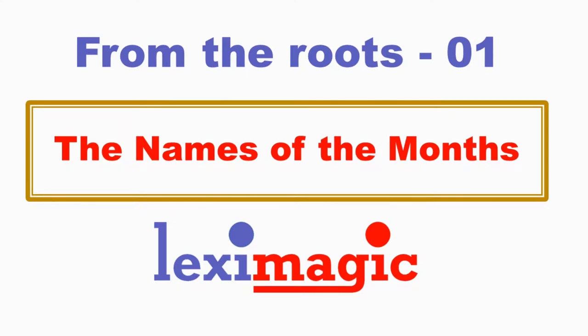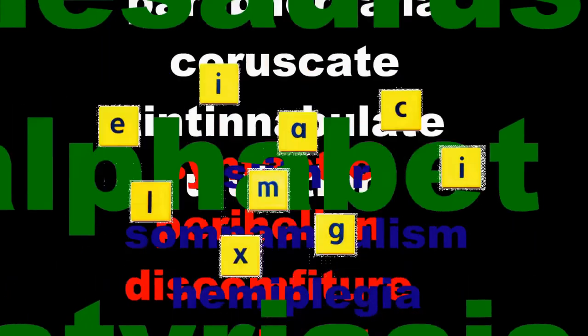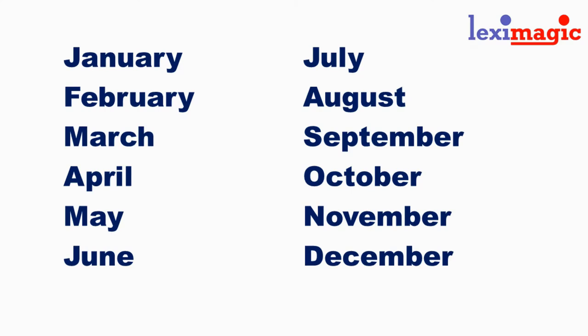In this unit we will look at some of the numerical roots which appear in the names of the months. Let us look at the names of the months of the Gregorian calendar and see if there are any numerical roots.